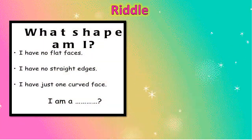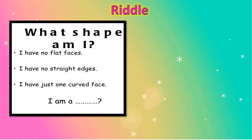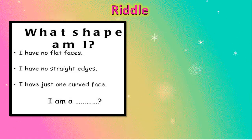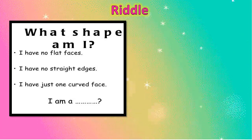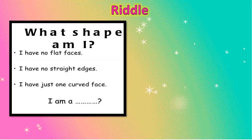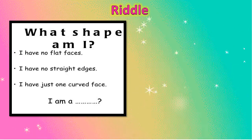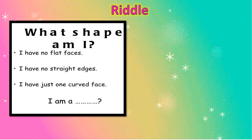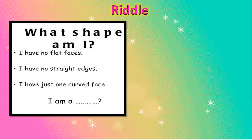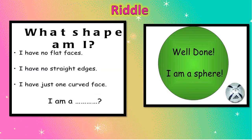Yes, students, now here is your first riddle. What shape am I? I have no flat faces, I have no straight edges, and I have just one curved face. Dear students, guess which shape this is — it has no edges, no flat faces, and only one curved face. I am a sphere!